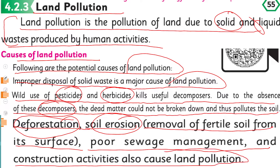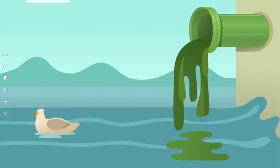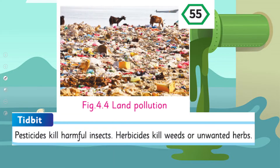Deforestation — darakhton ka kaatna — soil erosion, removal of fertile soil from its surface, poor sewage management, and construction activities also cause land pollution. Here you can see this is an example of land pollution — kis tarikay se baut saari gandagi zameen pe padi hai, with different animals around it — it is very harmful.